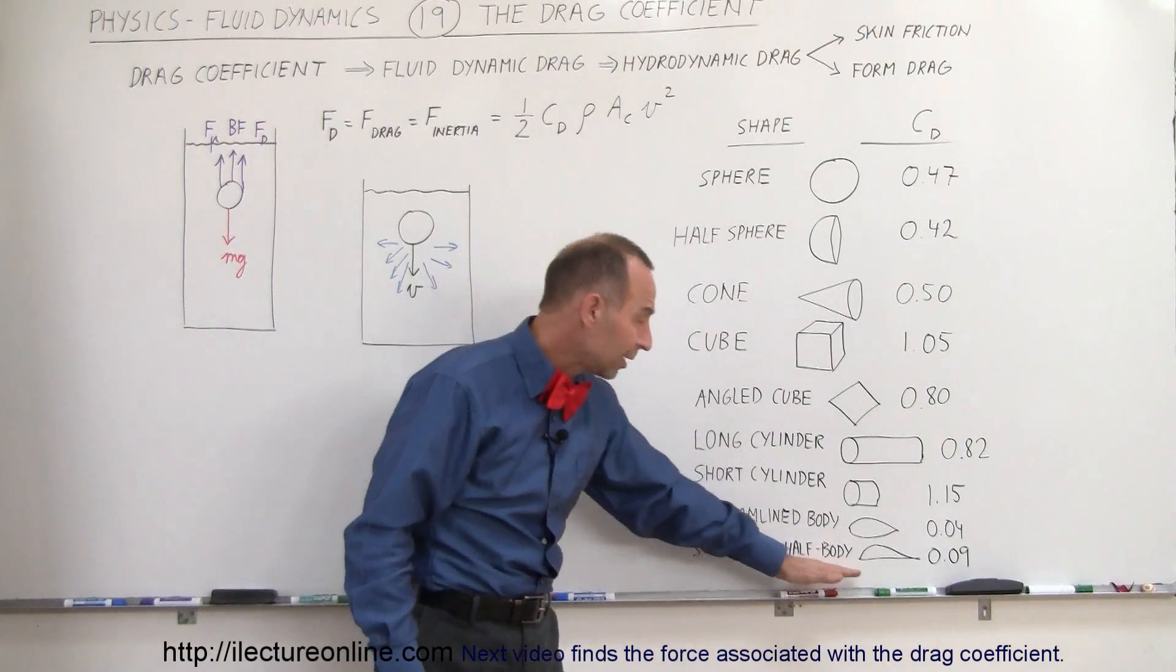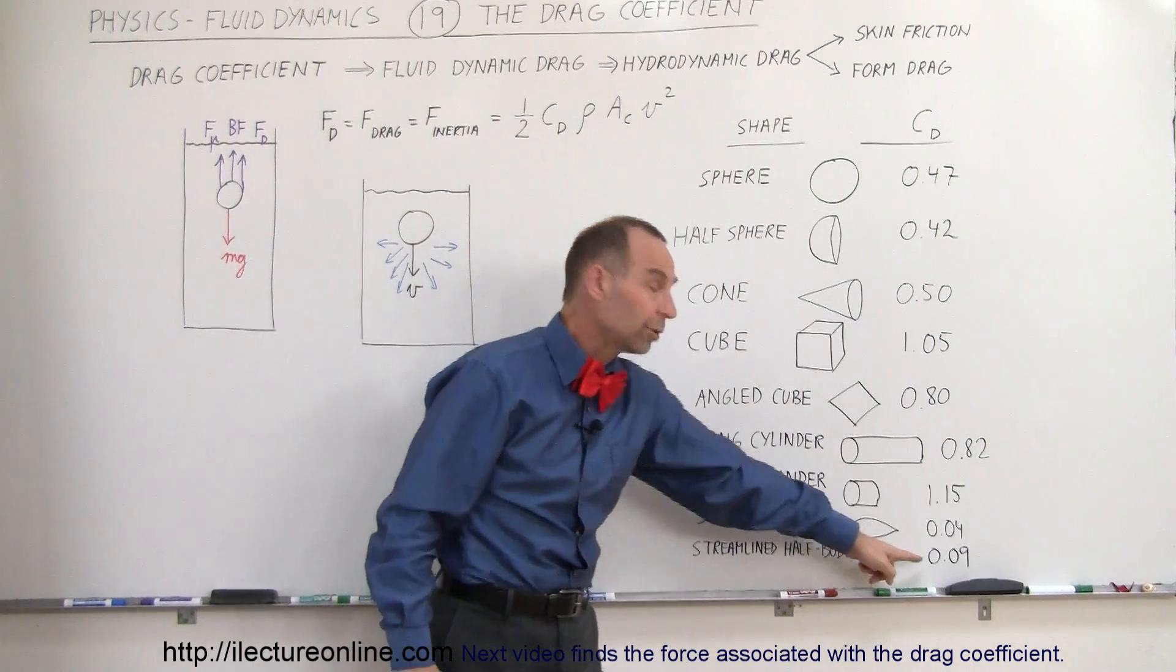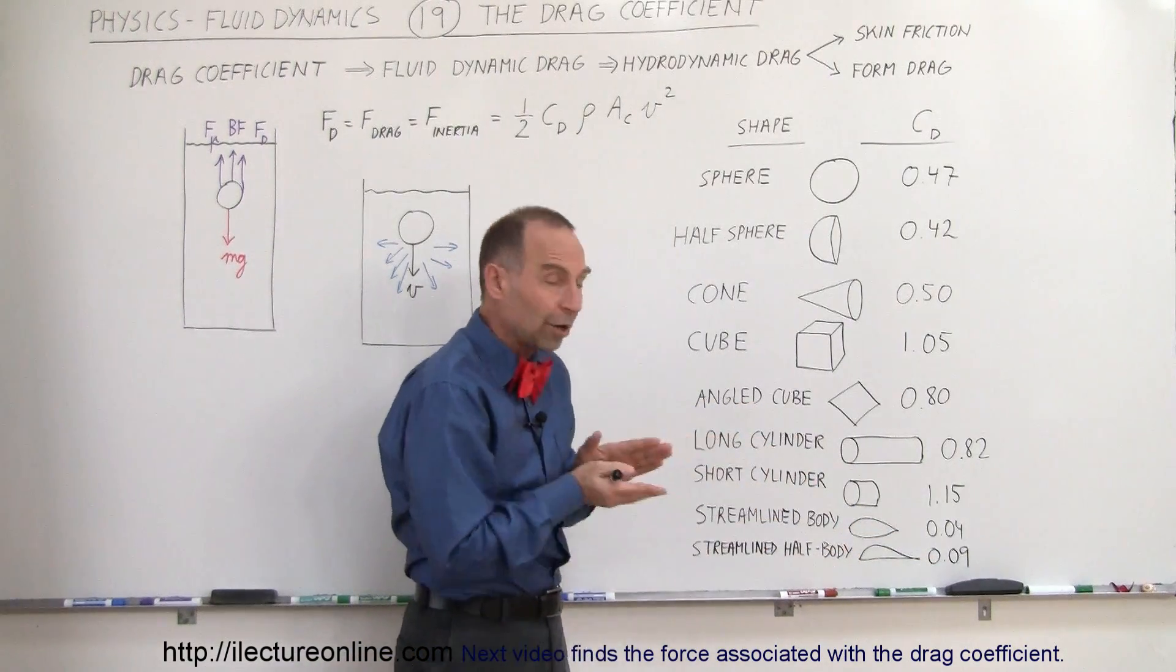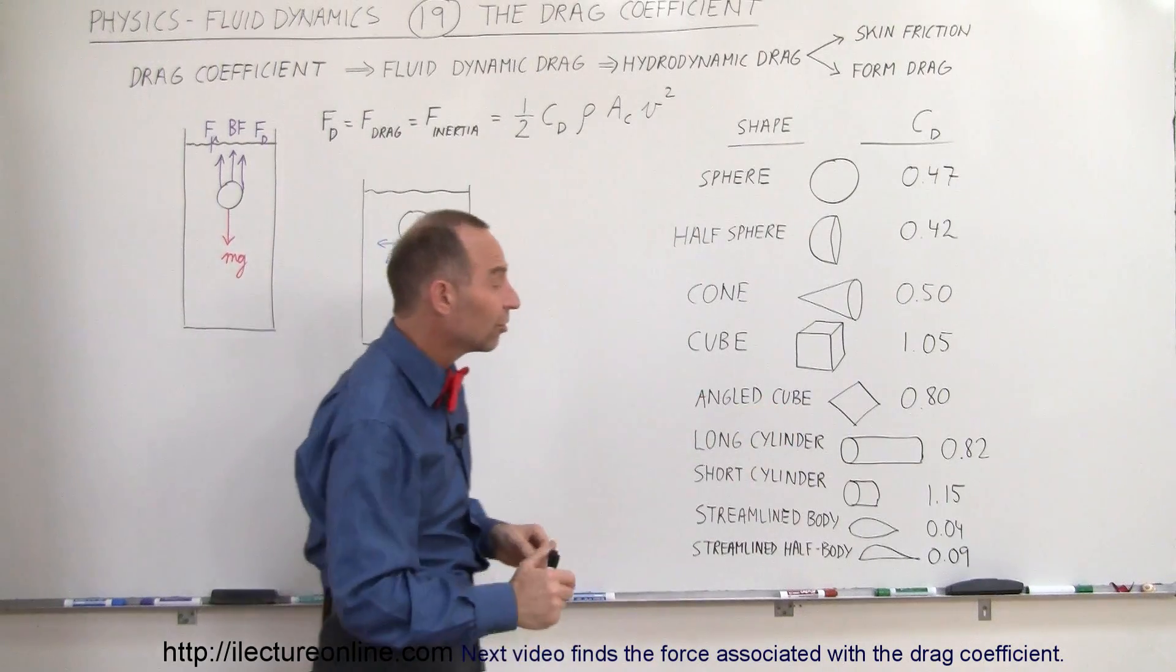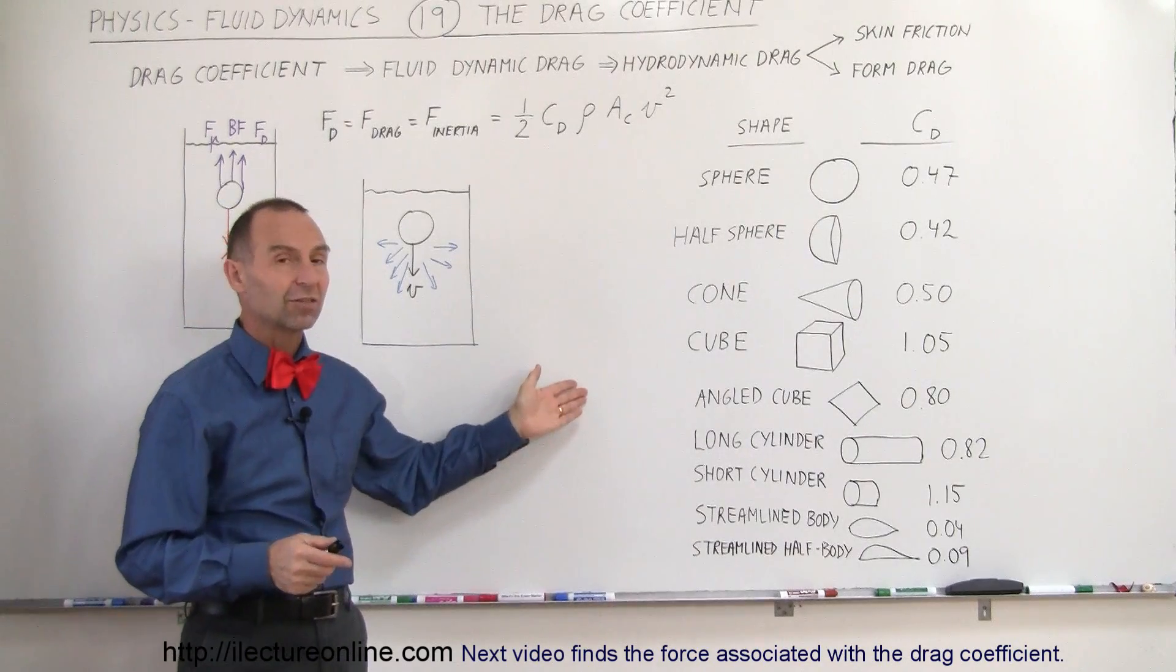Now, notice that if we cut it in half and we have a flat surface at the bottom, the drag coefficient more than doubles over having a symmetric shape where it kind of bends around in both directions. So notice there is a lot of differences in the drag coefficient between the different shaped objects.